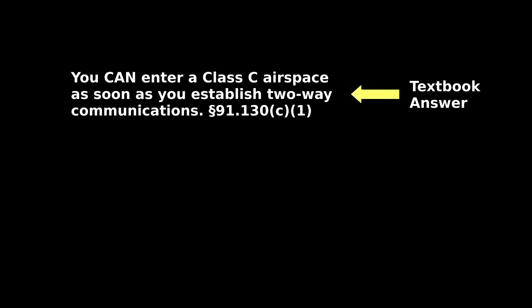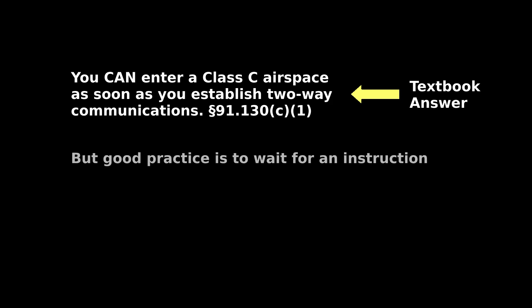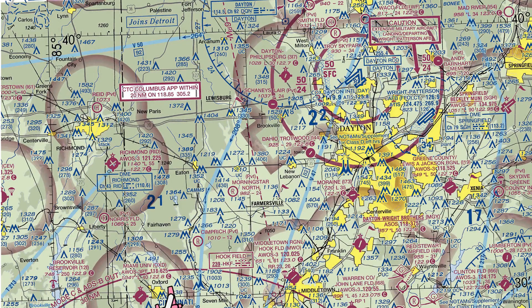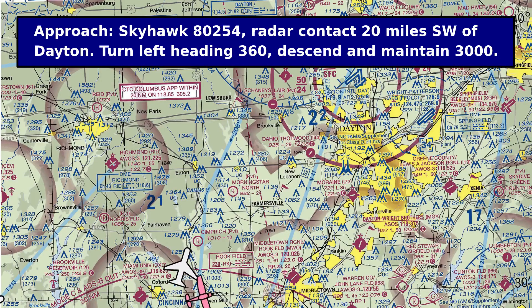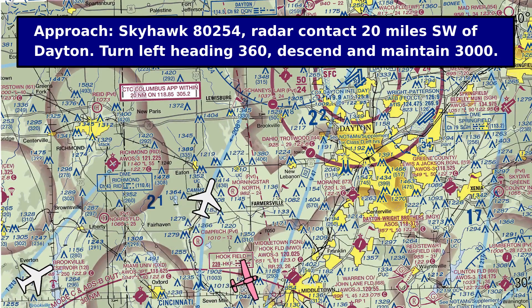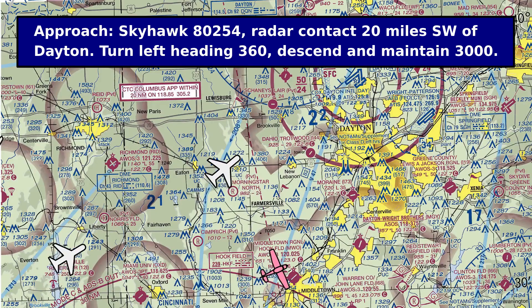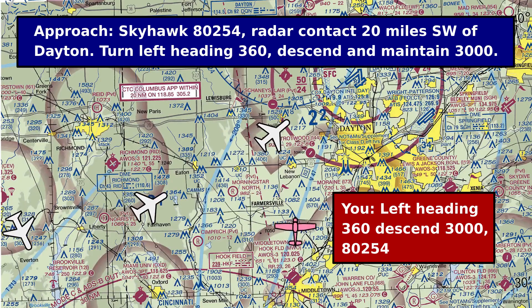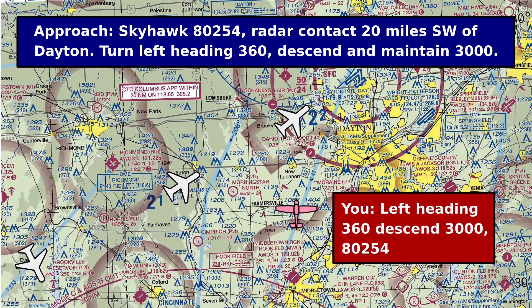Technically, you can enter the Charlie airspace as soon as the controller has addressed you by tail number, but it's good manners to wait for an instruction so you don't interfere with the flow of traffic that's already been sequenced. Your first instruction will usually be something like, 'Skyhawk 80254, radar contact 20 miles southwest of Dayton, turn left heading 360, descend and maintain 3000,' and to that you would reply, 'left heading 360, descend 3000, 80254.'